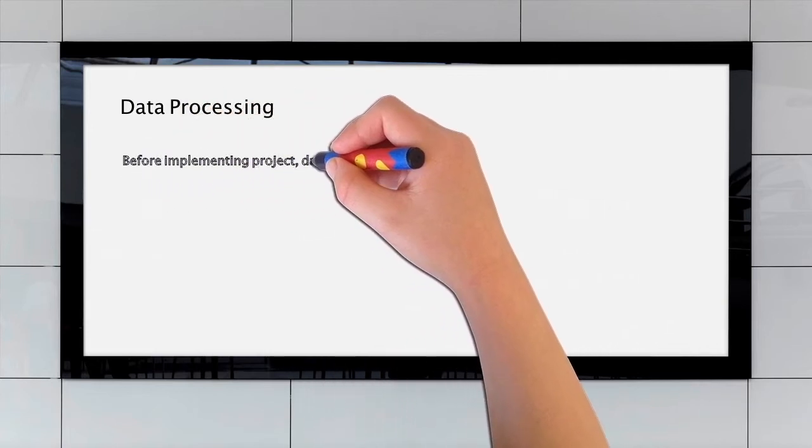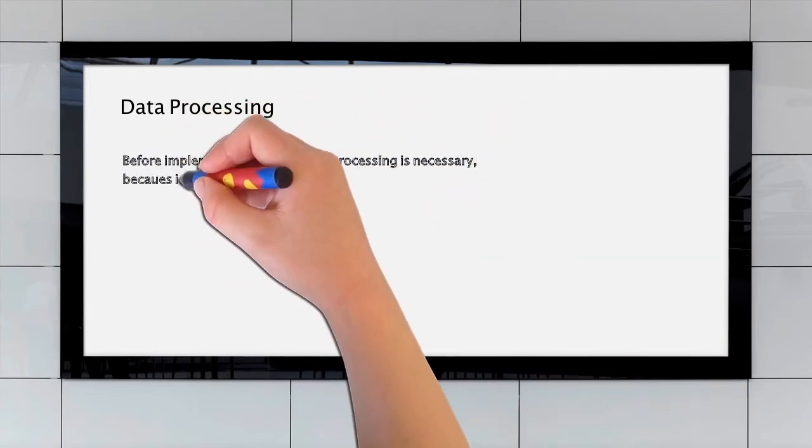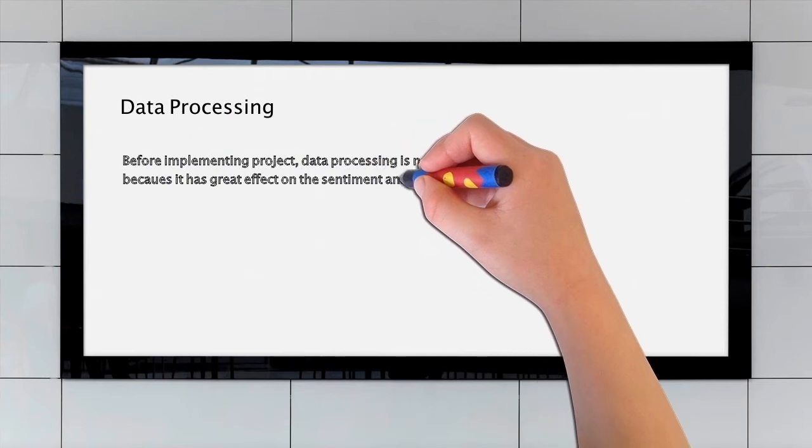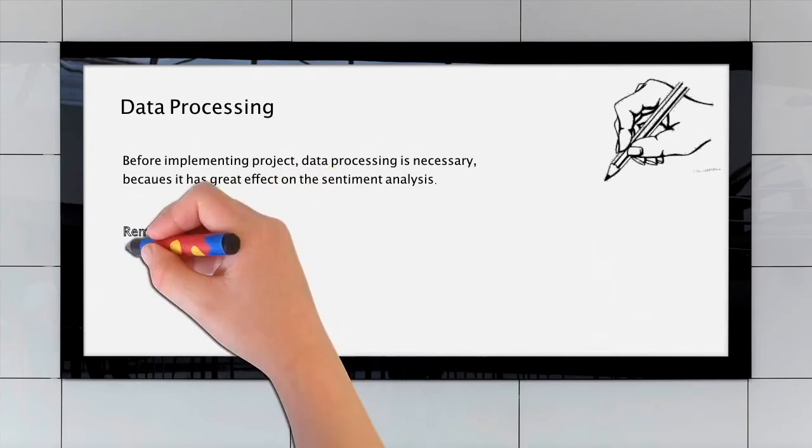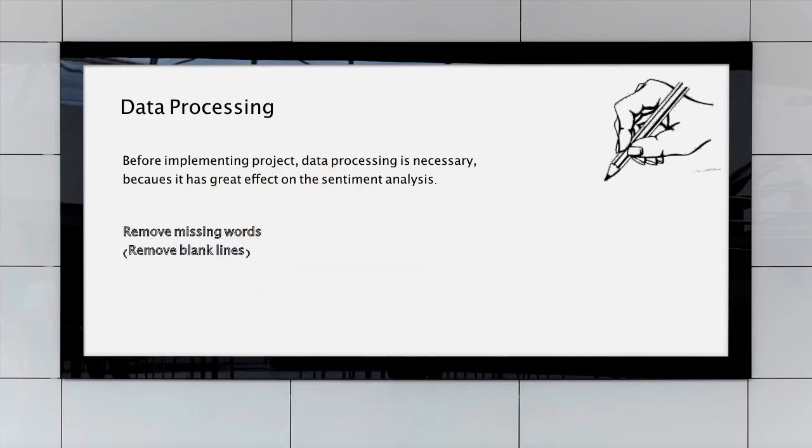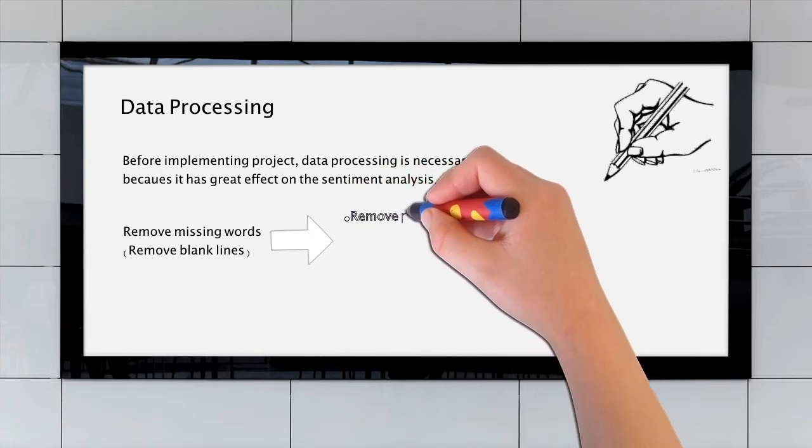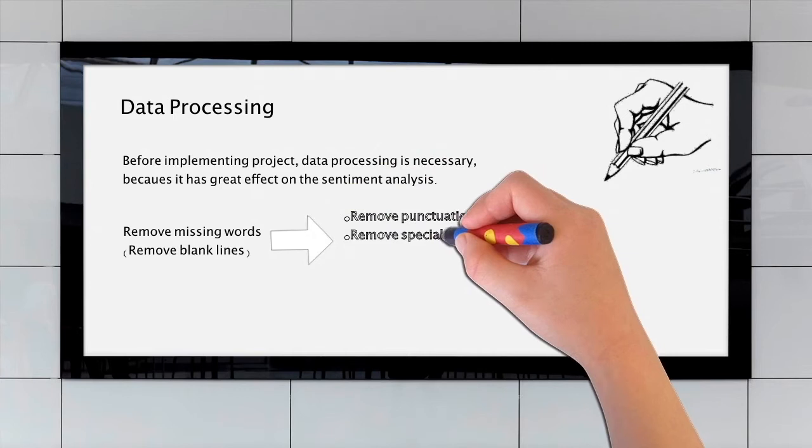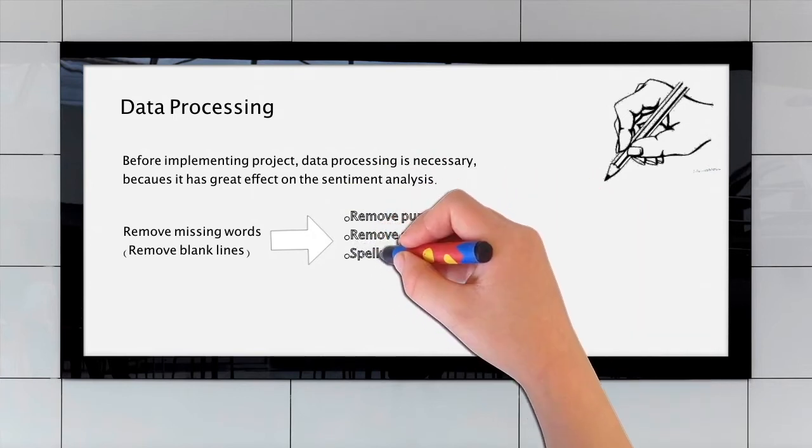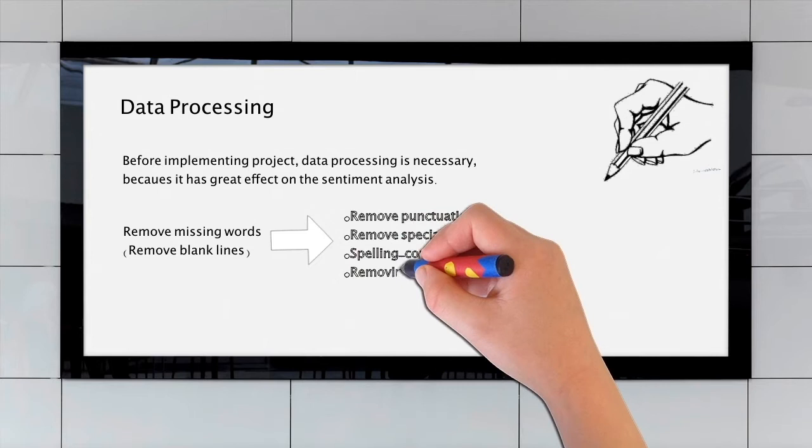Before implementing the project, we should do data processing. Because it's very necessary, it has a great effect on the sentiment analysis result. The first step is to remove missing words, for example, remove blank lines. And then, we will remove punctuation marks and some special symbols. We also do some spelling correction, as well as removing stopping words.